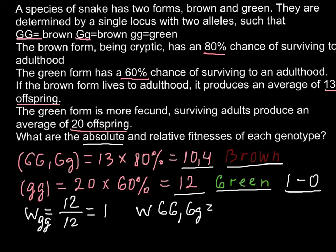So here we just have to divide the absolute number of the brown phenotype, that is 10.4, by the absolute number of the fittest genotype, that is 12.